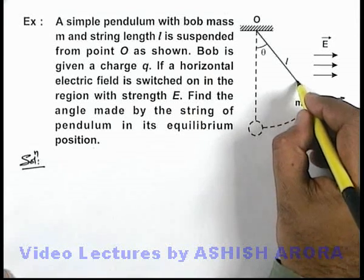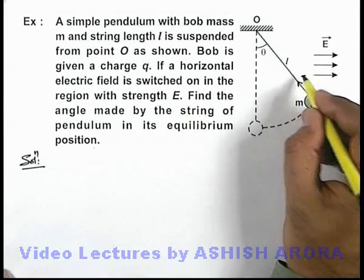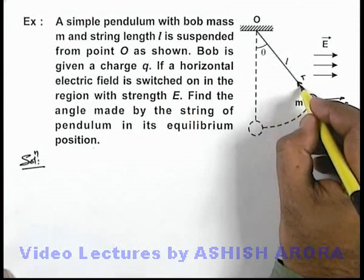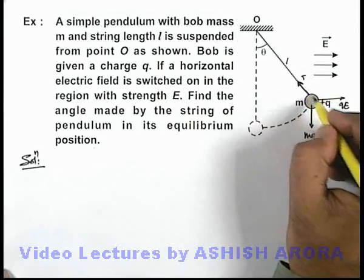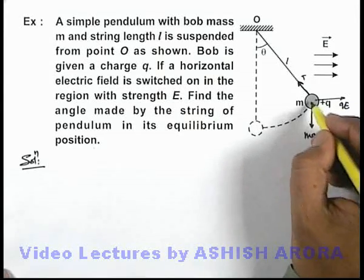And the string will be pulled with a tension T, which is balanced by these two forces acting on the bob.